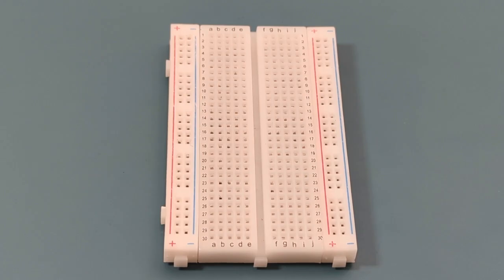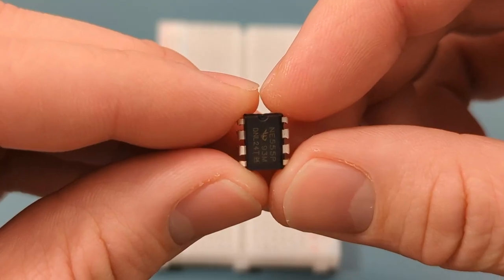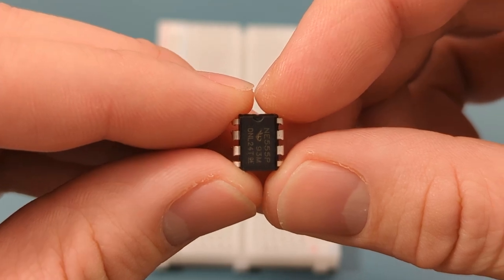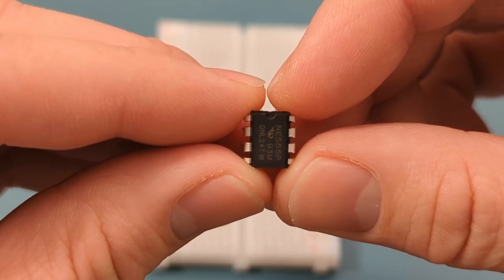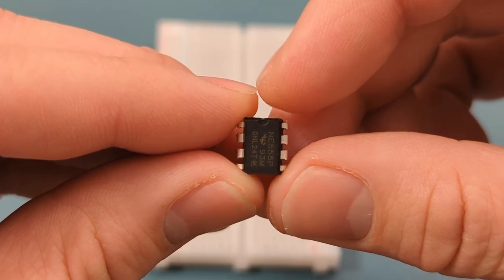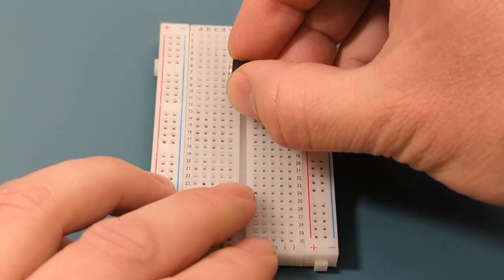Let's set up the circuit step by step. Begin by positioning the 555 timer IC on the breadboard. The pins are numbered counterclockwise, starting from the top left corner. Refer to the circuit diagram if you have questions about the circuit connections. Insert the 555 timer in the middle of the breadboard.